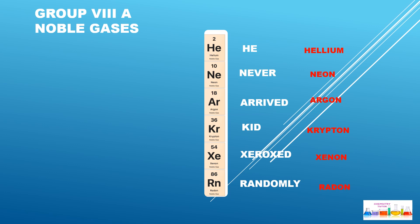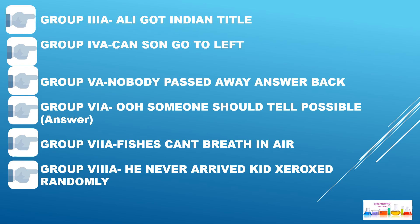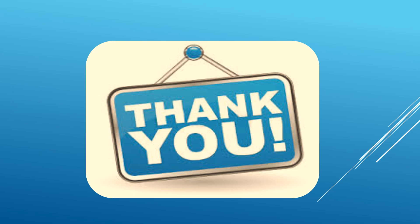Simply, you need to learn these sentences: Group 3A — 'Brother Ali Got Indian Title.' Group 4A — 'Can Sun Go To Left.' Group 5A — 'Nobody Passed Away, Answer Back.' Group 6A — 'Oh Someone Should Tell Possible.' Group 7A — 'Fishes Can't Breathe In Air.' Group 8A — 'He Never Arrived, Kate. Oz Randomly.' Thank you for watching my video. I hope it will be helpful for teachers and students.